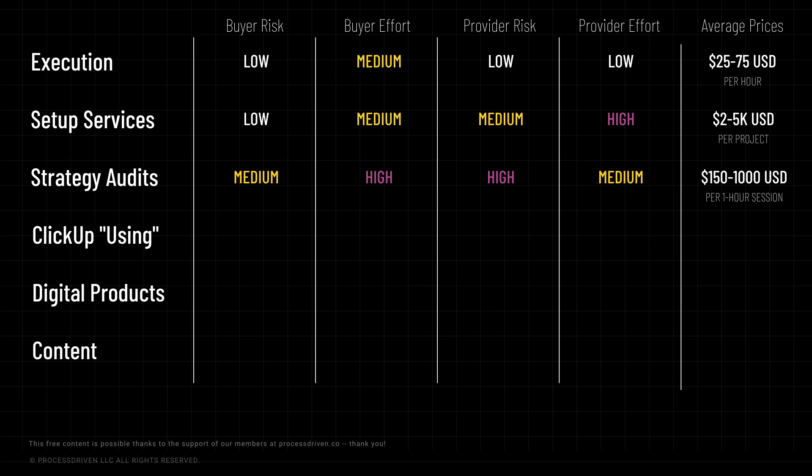This is definitely not something I'd consider as your first offer if you're just getting started in ClickUp service providing. The price point can tempt people — on average, a one-hour intensive with prep, a session, and post-work tends to vary from $150 to $1,000 for that same one-hour session. But don't get googly eyes over those numbers, because that's not the only hour of work involved. For example, I run one-hour sessions that can easily take three to three-and-a-half hours to deliver. So the real effective range is more like $50 to $300-plus per hour — and keep in mind, this is for a pretty high-stress delivery vehicle.